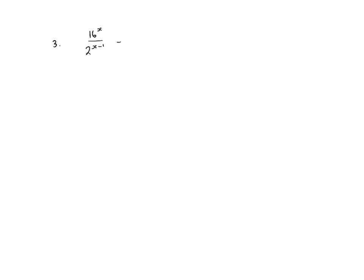For question 3, we have 16 to the power of x over 2 to the power of x minus 1, equals 2 to the power of a half. We rewrite everything using the same base number: 2 to the power of 4 to the power of x, over 2 to the power of x minus 1, equals 2 to the power of a half. So we have 2 to the power of 4x over 2 to the power of x minus 1 equals 2 to the power of a half.